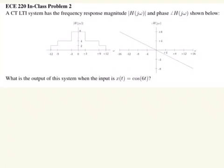So here's our first example. We're given this LTI system that has this frequency response magnitude and this frequency response phase. If we take a close look at the phase, we can see that it's a linear phase. The slope of this line — it's at 0 at 0, and then it's at minus 4 at 8. So the slope of that line is minus one-half, so basically we can say that the phase of H is minus one-half omega.